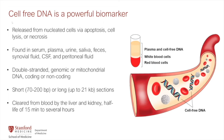Cell-free DNA is a very powerful biomarker. It is DNA released from nucleated cells either by normal cell turnover, apoptosis, cell lysis, or necrosis. It can be found in any body fluid — plasma, urine, saliva, or CSF — and can be genomic or mitochondrial DNA, coding or non-coding. It's a real-time biomarker because cell-free DNA is cleared from the blood by the liver and kidneys with a half-life of about 15 minutes to several hours, reflecting cell turnover at a particular snapshot in time.